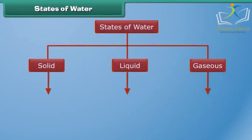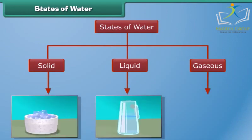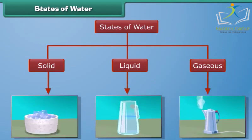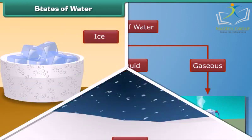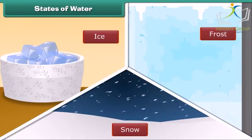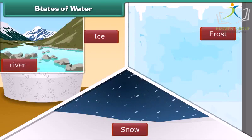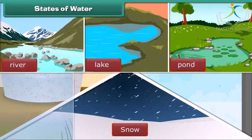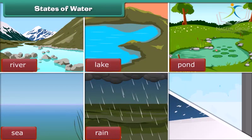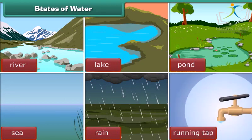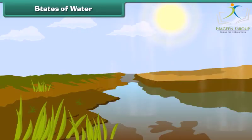Water exists in three states: solid, liquid, and gaseous. Ice, snow, and frost are examples of water in the solid state. You see liquid water in rivers, lakes, ponds, and the sea, when it rains, and the water coming out of a tap. Water vapor is a gas in the air — you can't see it because it is invisible.